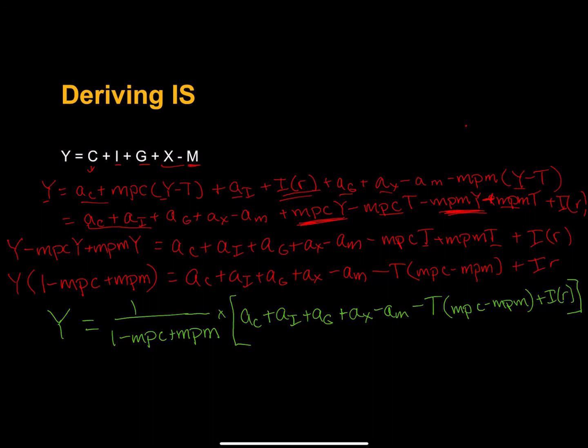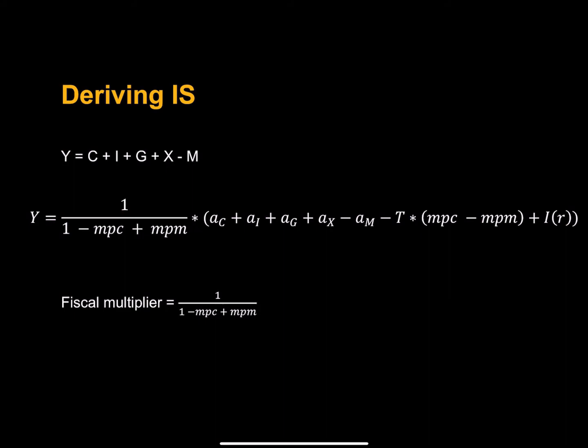And there we go. So what we have here is we have real GDP as a negative function of the interest rate. If the interest rate increases, this part here decreases and real GDP decreases. Now I've rewritten it here and cleaned it up so you can have a look at it. Just like we had before, this term right here is sometimes called the fiscal multiplier. This fiscal multiplier should be some number greater than one. That's because MPC is less than one and MPM should be something less than MPC. So that means if we get an increase in say government purchases, we should see an increase in real expenditures greater than the increase in autonomous spending.